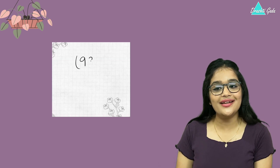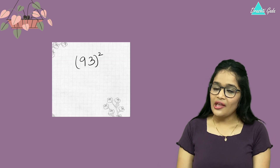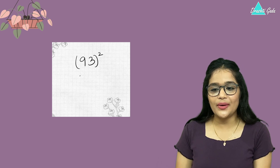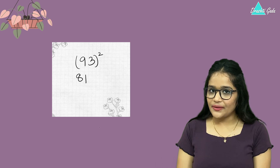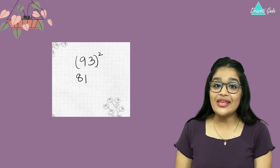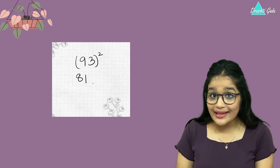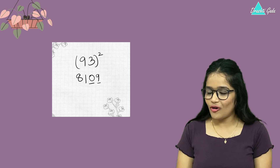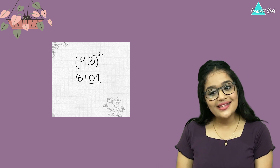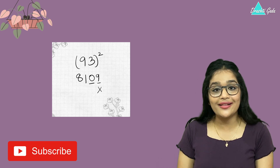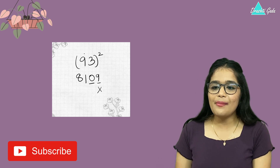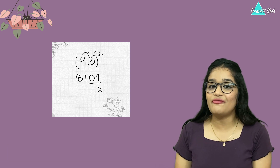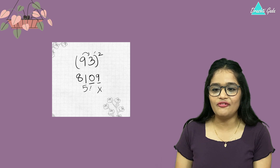Last example: 93 squared. In the first step, write down the squares. Nine squared is 81, so I write 81. The second digit is 3; three squared is 9, and we express it in two-digit form as 09. Step two: cross the units place, then multiply the digits. Nine times three is 27. Then multiply by two: 27 into 2 gives 54. So we write 54 here.